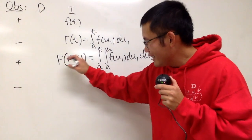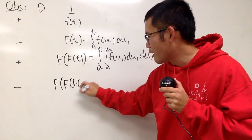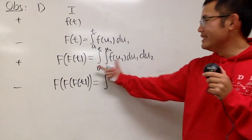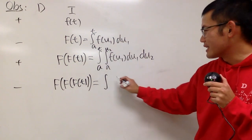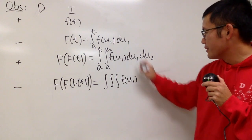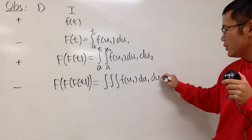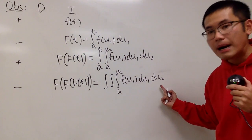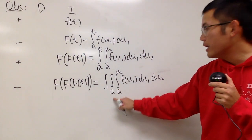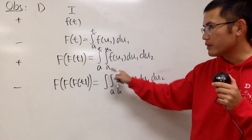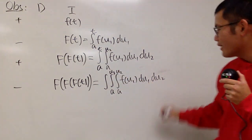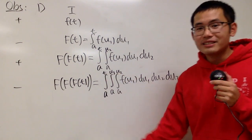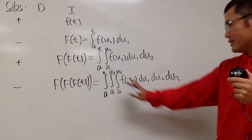For integrating this one, it's F of F of F of t — three of them. This one is going to be integrating the previous, so we write the integral integral of f(u1) du1, and we also have du2. For the very inside, we go from a to u2, and in the u2 world we again go from a, but we cannot go to t because you have to save the t for the outermost integral. So I will choose u3 right here, and then we have du3. And then we go from a to t on the very outside.